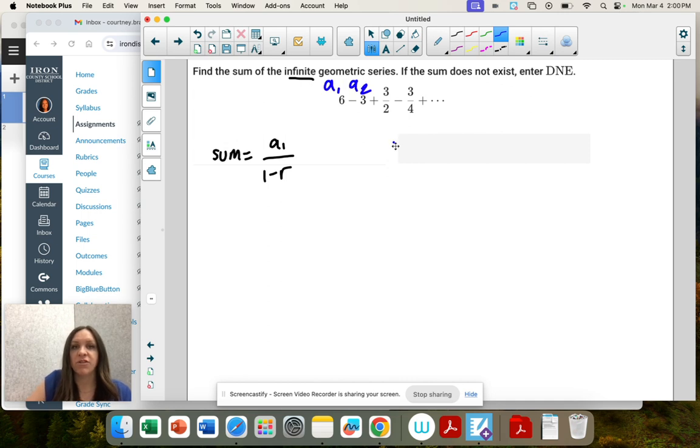Our second term is negative 3, and we need that to find the ratio. The ratio is the second term divided by the first term, so negative 3 divided by 6, and that reduces to negative 1 half.